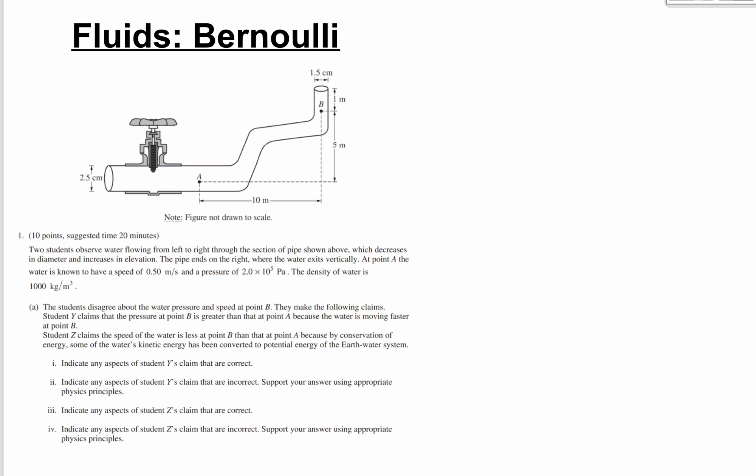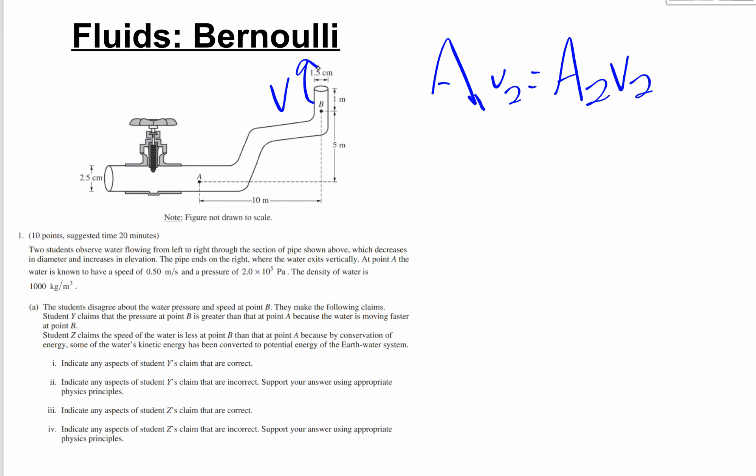Now a qualitative Bernoulli question. We have a pipe with points A and B, where B is narrower and higher. Students disagree about the water pressure and speed at point B. Using the continuity equation a1·v1 equals a2·v2, at the narrower point B the velocity must be higher. So when student Y says water moves faster at B, that part is correct.